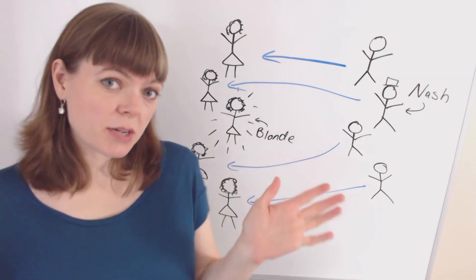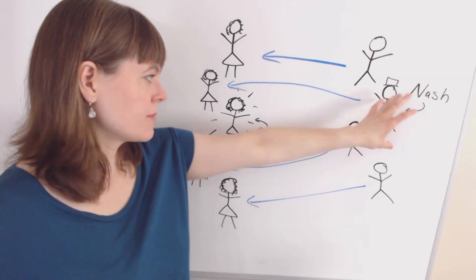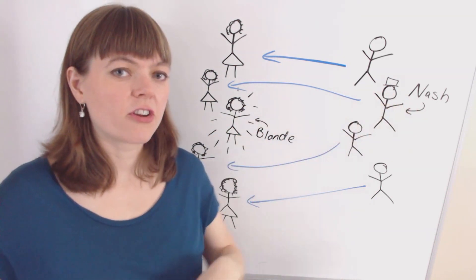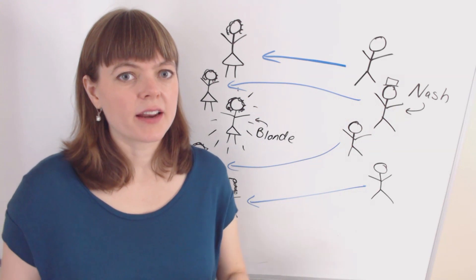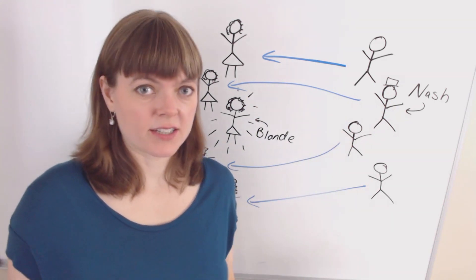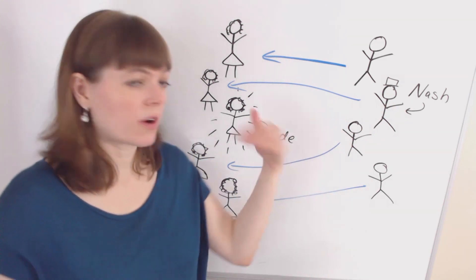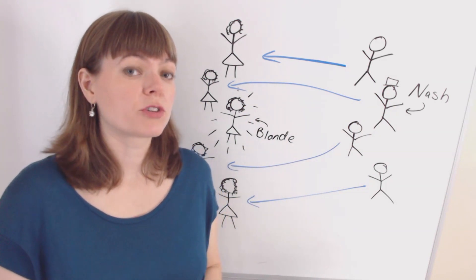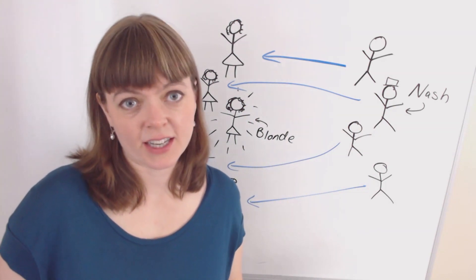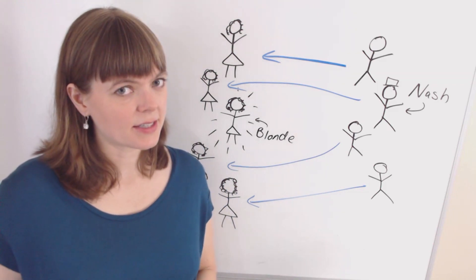The logic behind this is that Nash claims if they all go for the blonde, they're going to block each other and will mostly get rejected, in which case they'll turn to one of the other girls for a date, but the other girls will reject them because they don't want to be the second choice. That's the logic.